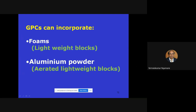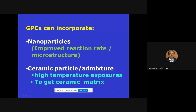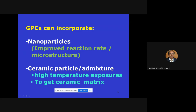Lightweight blocks can be made using foam addition to the geopolymer matrix. Aerated geopolymer concrete (similar to AAC blocks) using aluminum powder addition is also possible and some work has been done. Nanoparticles have been added to geopolymer concrete and significantly improve properties, including fire resistance in certain cases. Ceramic particles such as zirconium oxide also improve high-temperature resistance and have been tried successfully.